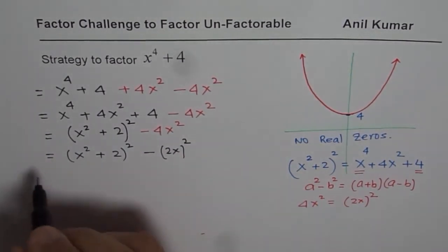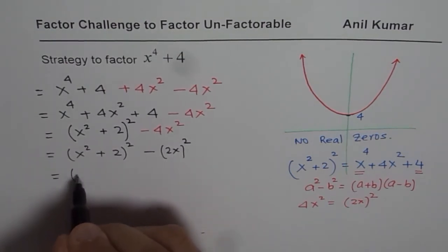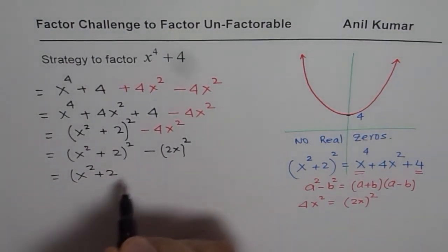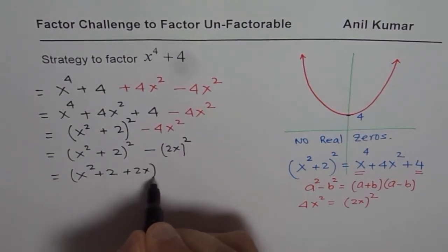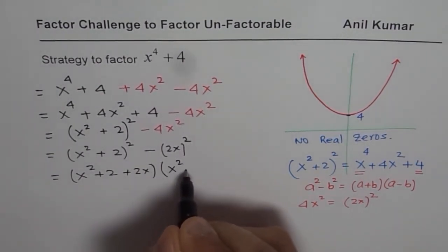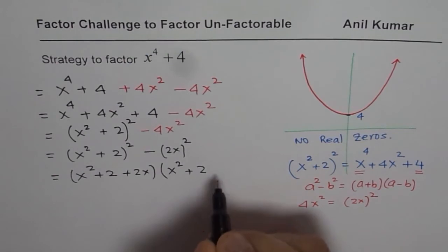That is difference of squares. So we can now factor this as x square plus 2 whole square. So we can now factor this as x square plus 2 plus 2x times x square plus 2 minus 2x.